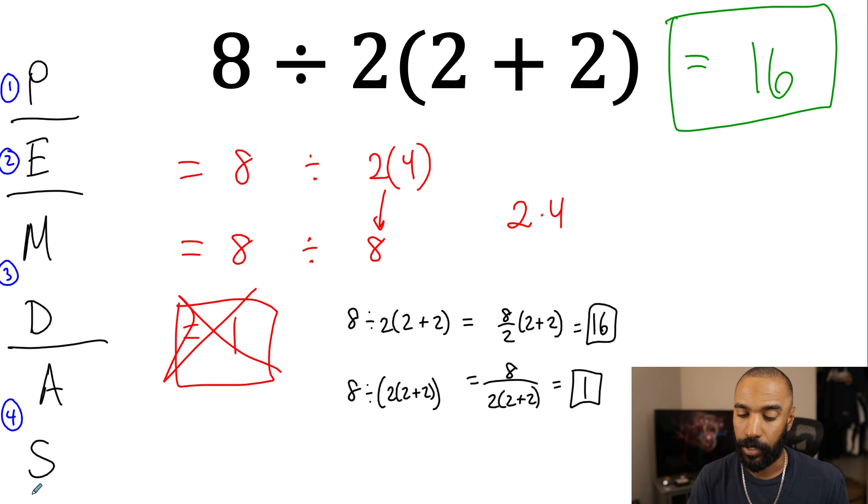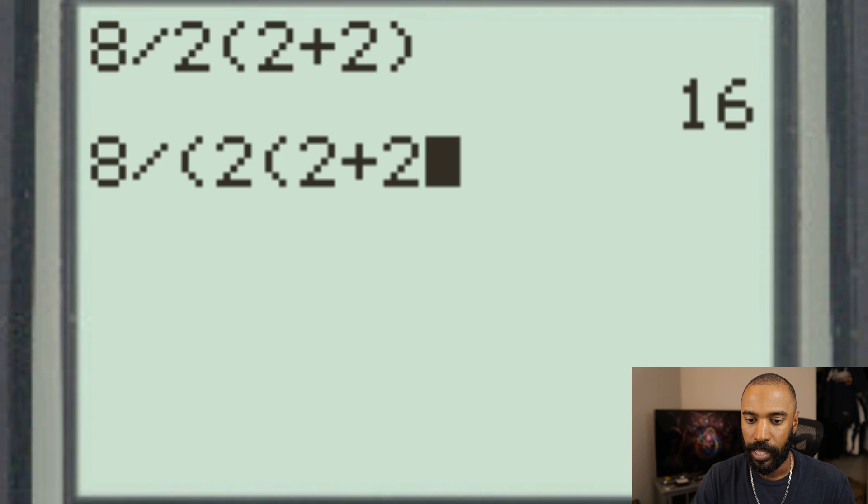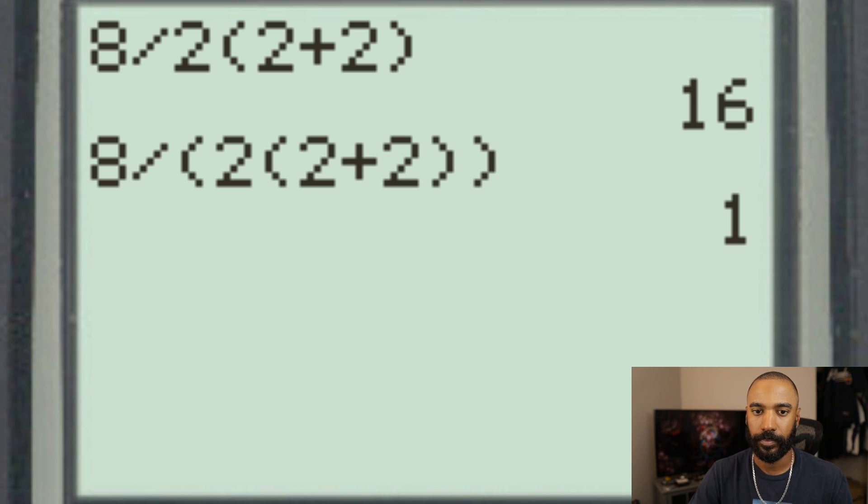So I could write 8 divided by parentheses 2 times quantity 2 plus 2 like that. That will give me what I'm looking for, which gives me my 1 answer as opposed to my 16 answer. So if I go to the calculator again, graphing calc, and let's go ahead and do 8 divided by quantity 2 times the quantity 2 plus 2, that's where you'll get an answer of 1.